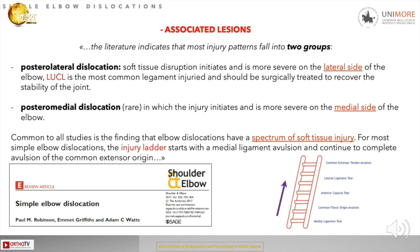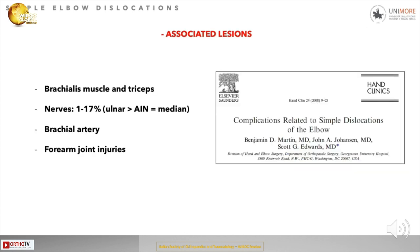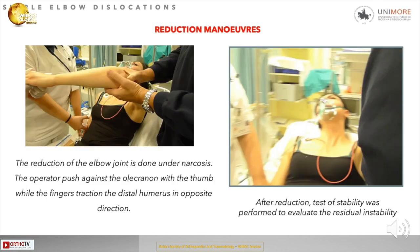In general, for most simple elbow dislocations, injury tends to start with the medial ligament avulsion and continues to complete avulsion at the common extensor origin. Other associated lesions can include the brachialis muscle and triceps, nerves — primarily the ulnar nerve, and secondarily the anterior interosseous nerve branch of the median nerve — as well as the brachial artery and forearm joints.